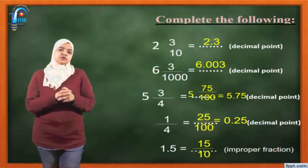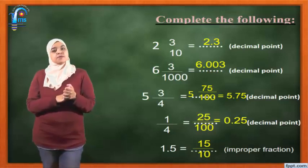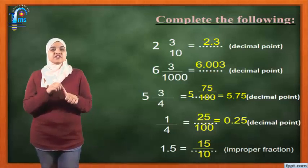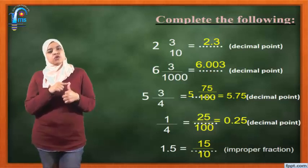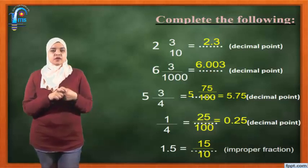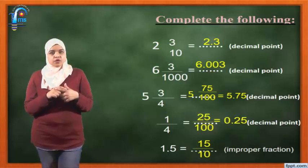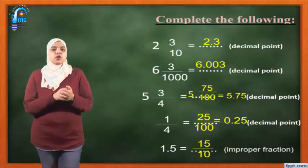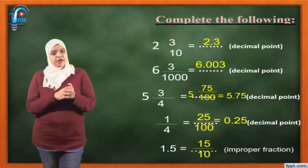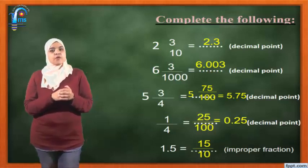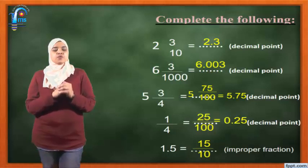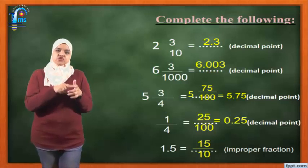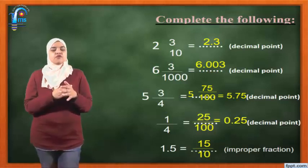5 and 3 over 4 equals what? I want to write it as a decimal, but the denominator is not 10, 100, or 1000. So the first step is to convert it into 10, 100, or 1000. How? By using the friend numbers, which are 2, 4, 8, 5, 25, and 25. The friend of 4 here is 25. So I make the denominator times 25 and the numerator times 25. Our new fraction will be 5 and 75 over 100. Now the denominator is 100, so just jump two places. The answer will be 5.75.